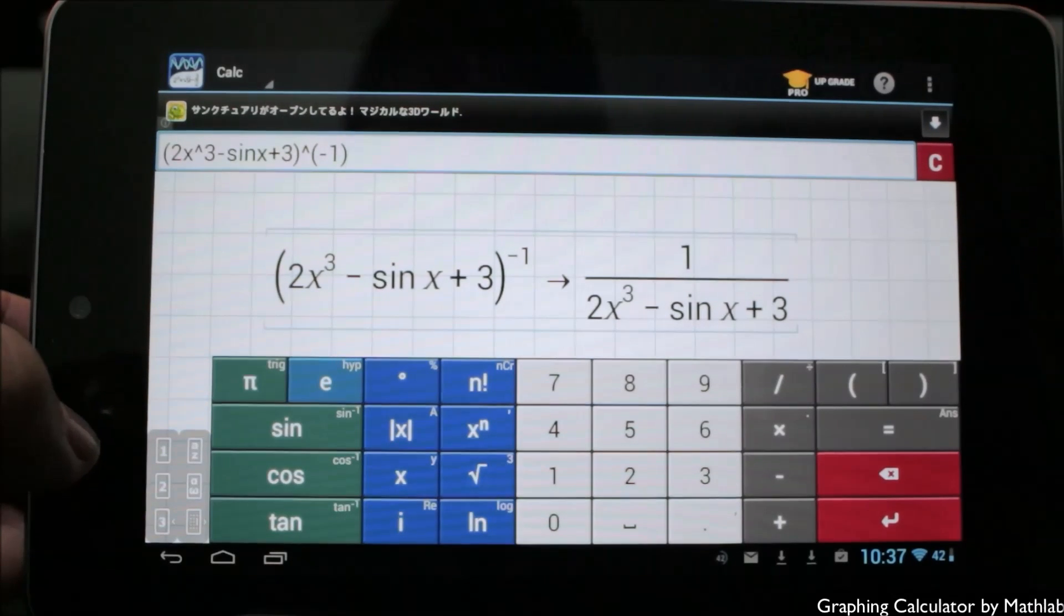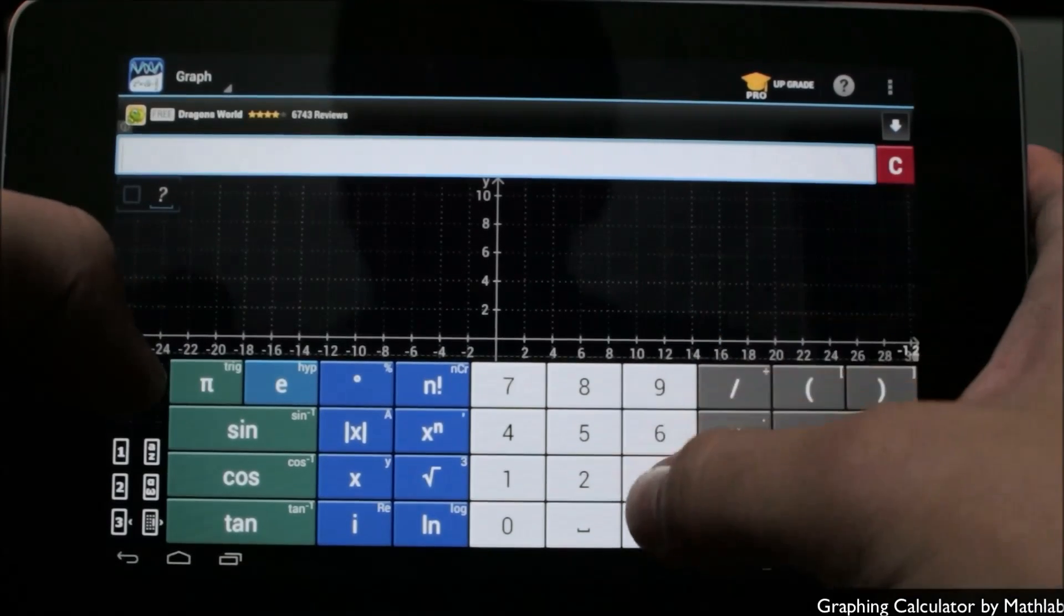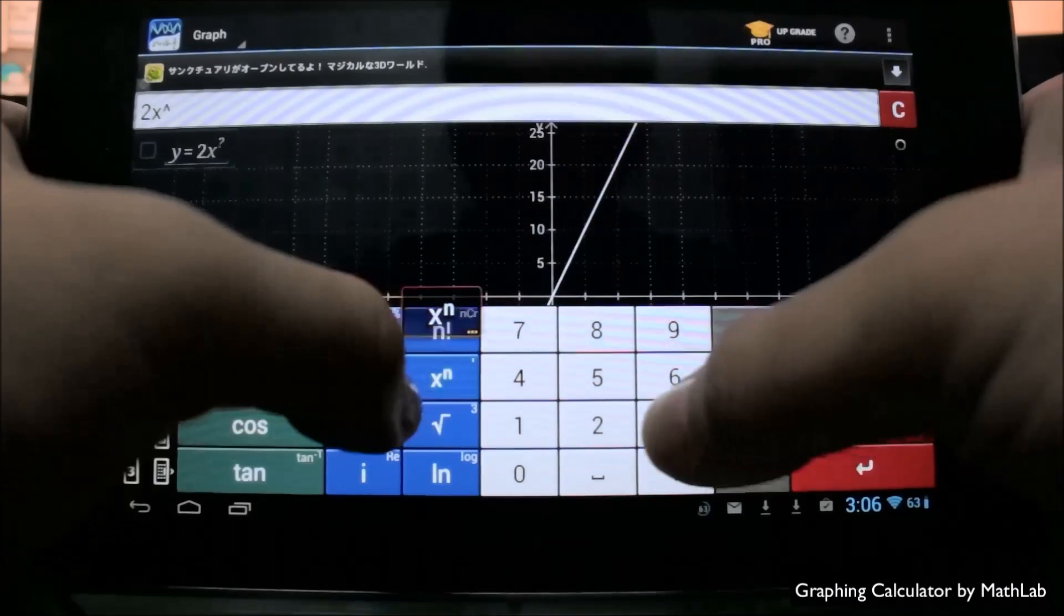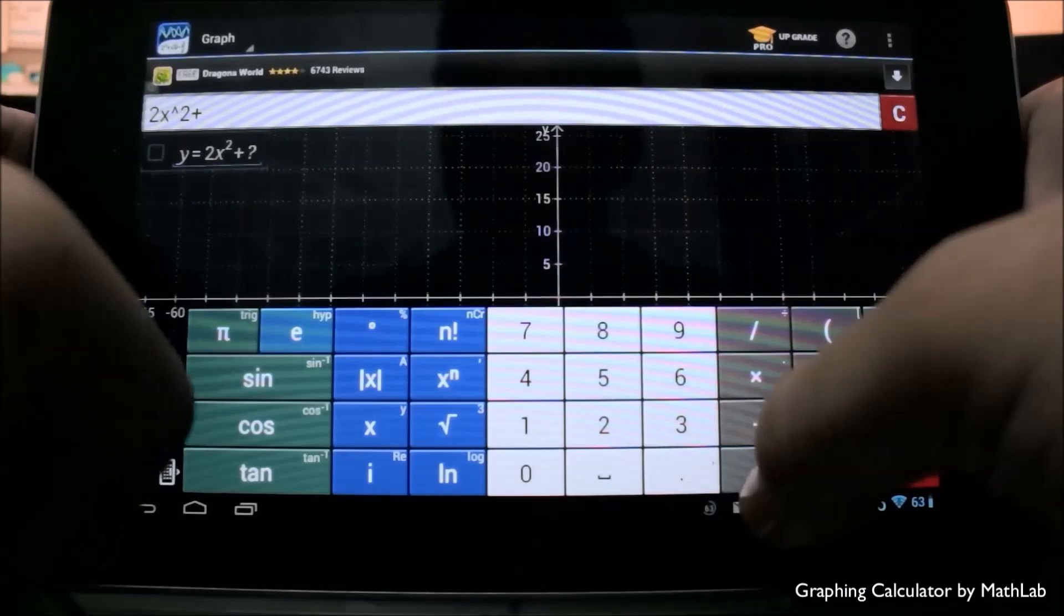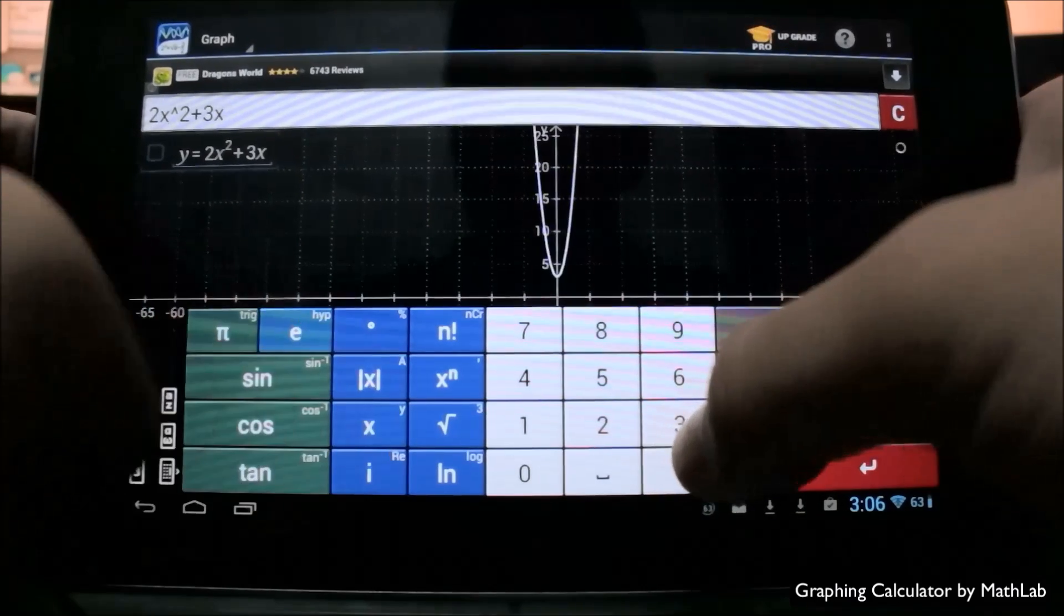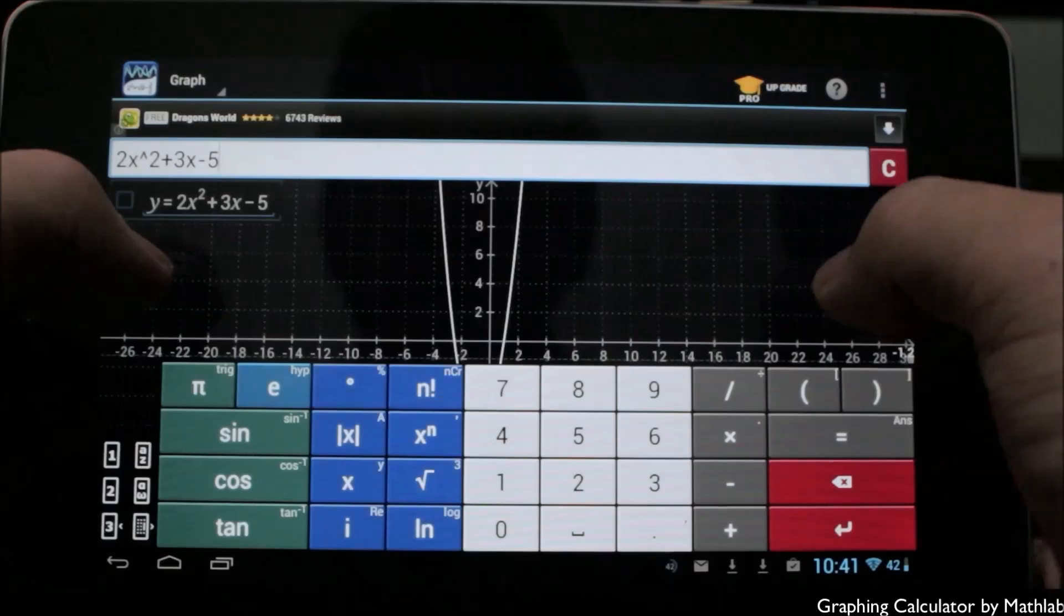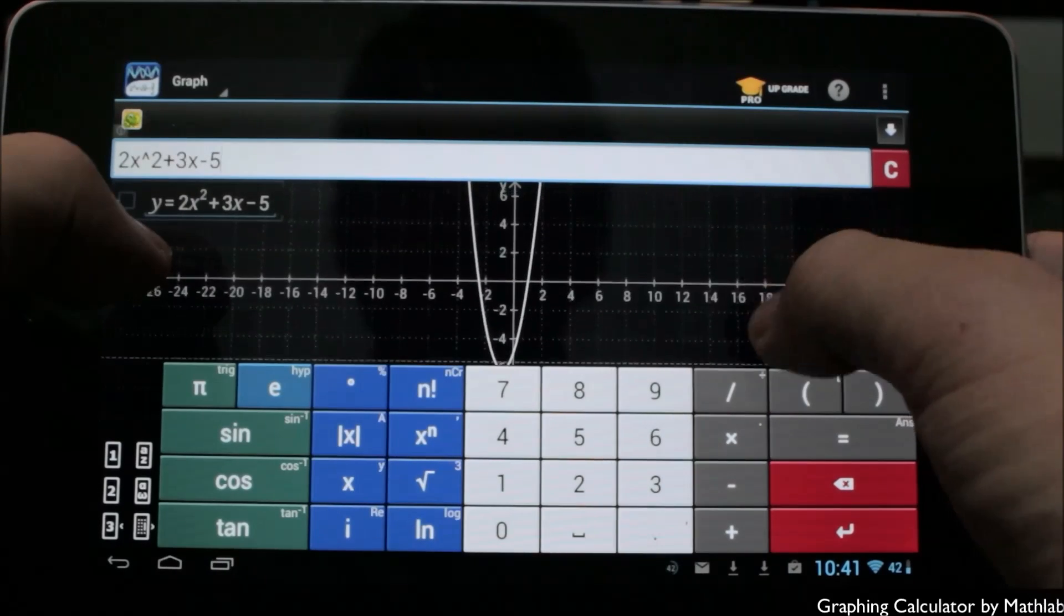Let's go ahead and take a closer look at the graph here, so we're going to do some graphing of functions. For example, I'm going to do 2x to the power of 2 in this case, plus 3x, minus 5. You can see as we do that, it will automatically show us here in the graph and plot it out for us.